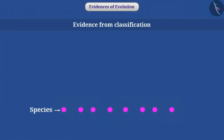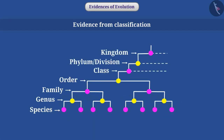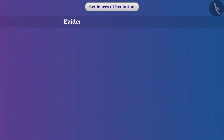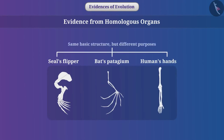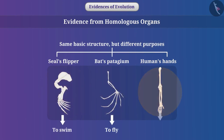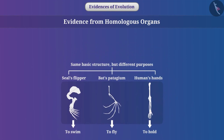Evidence from classification: there are many species of plants and animals on earth. If we classify them on the basis of natural similarities and differences — kingdom, phylum or division, class, order, family, genus, and species — then we get the idea of how various groups would have evolved. Evidence from homologous organs: a seal's flipper, bat's patagium, and human's hands all have the same basic structure but are used for different purposes — patagium to fly, seal flippers to swim, and human hands to hold. Such structures are called homologous structures. Homologous structures suggest the same ancestor — these organisms must have evolved from a common ancestor.